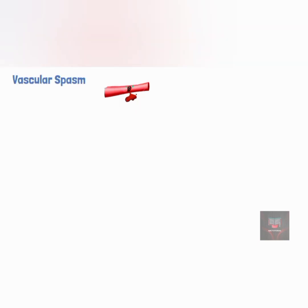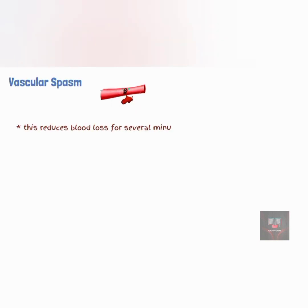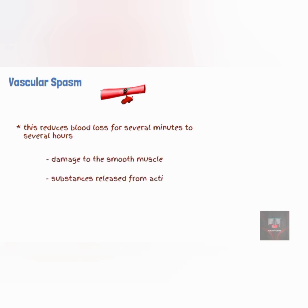This contraction is a reaction called vascular spasm. It reduces blood loss for several minutes to several hours, during which time the other hemostatic mechanisms come into operation. The spasm is probably caused by damage to the smooth muscle, by substances released from activated platelets, and by reflexes initiated by pain receptors.